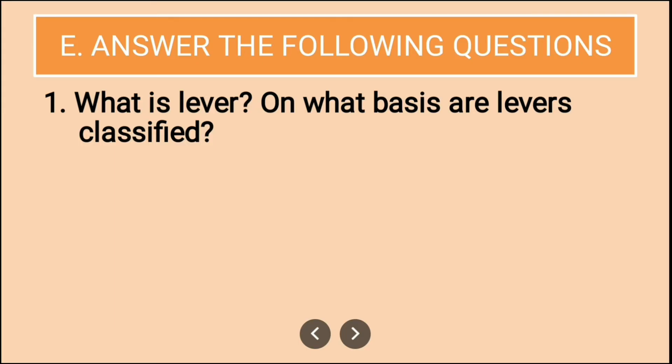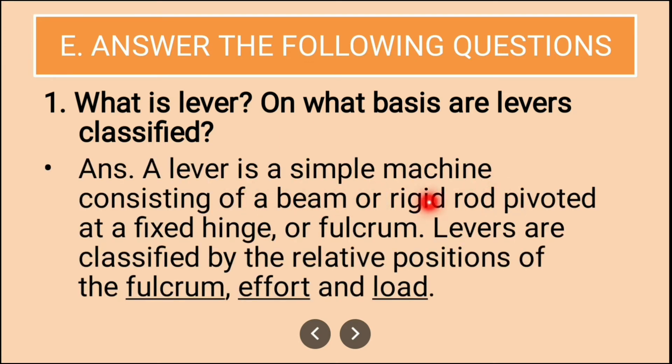Now comes long answers. So first in the question is: what is lever? On what basis are levers classified? Here you will write: a lever is a simple machine consisting of a beam or a rigid rod pivoted at a fixed hinge or fulcrum. Levers are classified by relative position of fulcrum, effort and load.